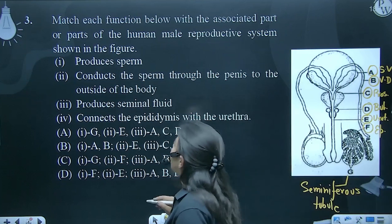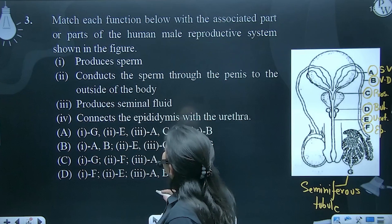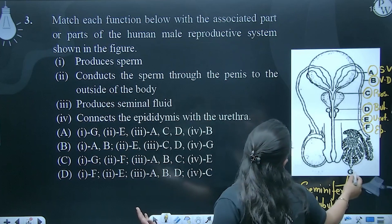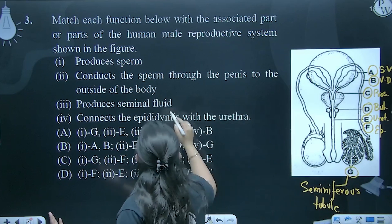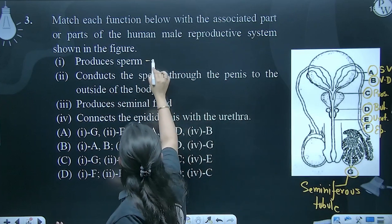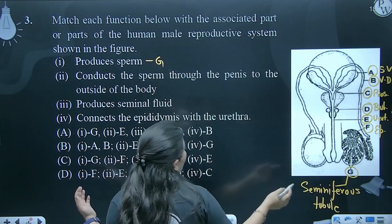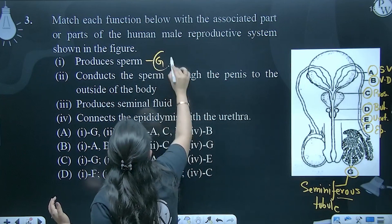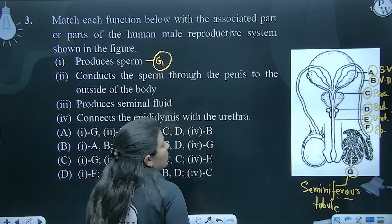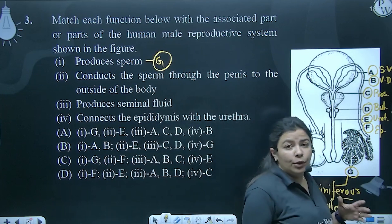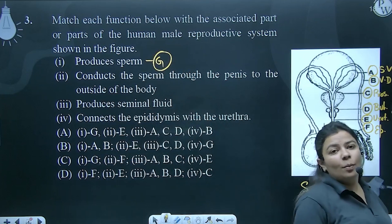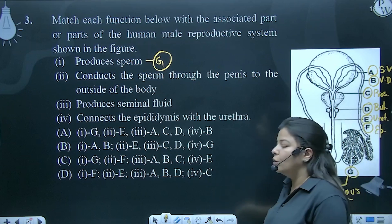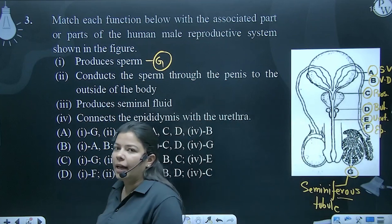Let's see F mein labeled kya gaya. To produces sperm — produce kaun kar raha hai sperm ko? G region is responsible for the production of sperm, yaani ban kahan raha hai? Seminiferous tubule mein ban raha hai. Is tarike ke questions ko solve karne ke liye ye approach hai jo maine abhi amplify ki hai. Is approach ka kya sense ban raha hai?